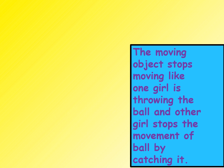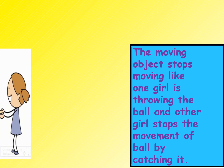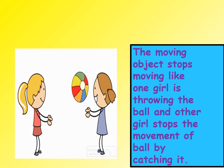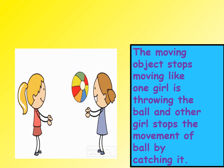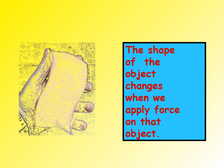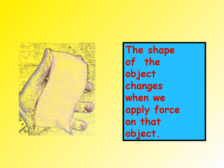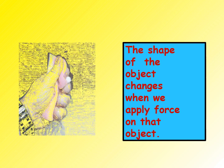The moving object stops moving — like one girl is throwing the ball and the other girl stops the movement of the ball by catching it. The ball is the object; the girl throws it which makes it move, but the other girl catches it to stop its movement. The shape of the object also changes when we apply force — such as this sponge. What is this man doing to the sponge? Yes, he is squeezing it. You can see the sponge is shrinking and then enlarging because of the force the man is putting into that object.